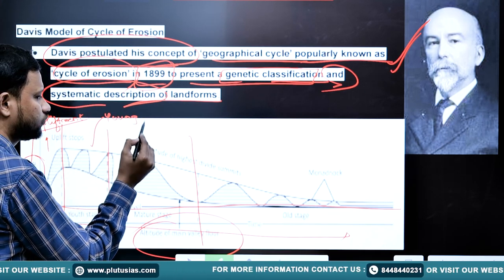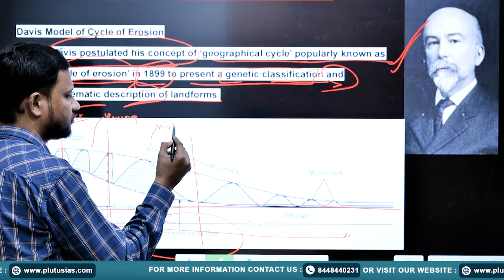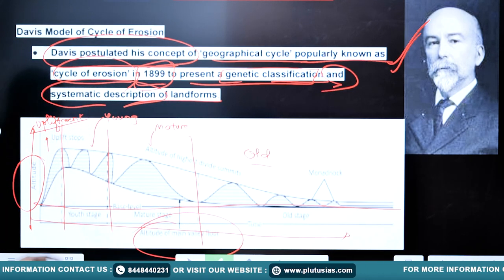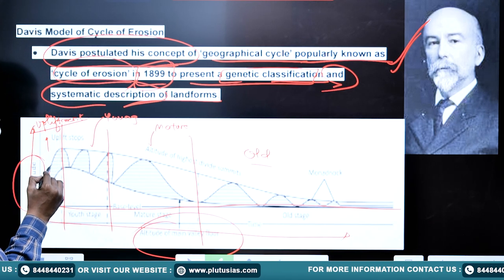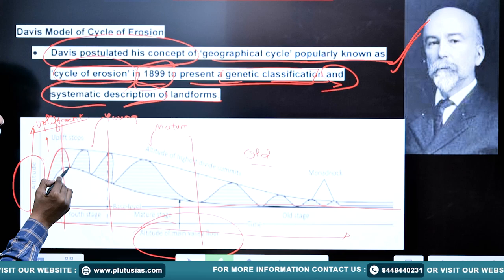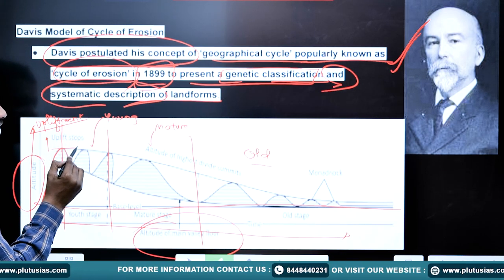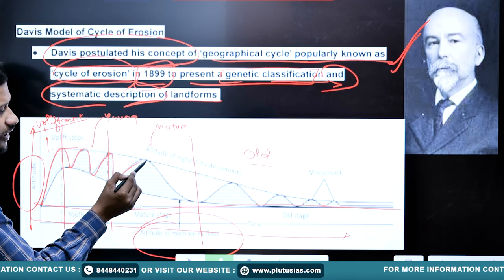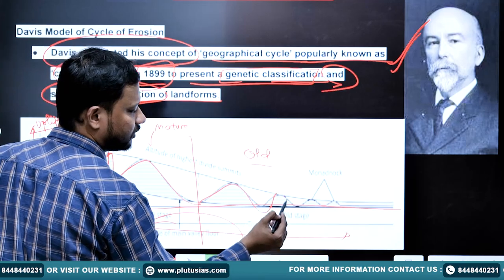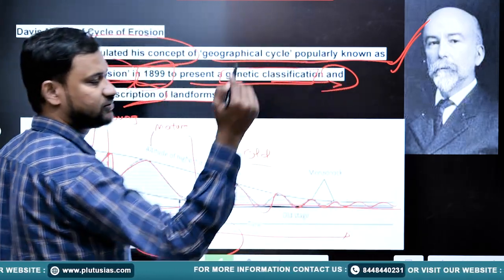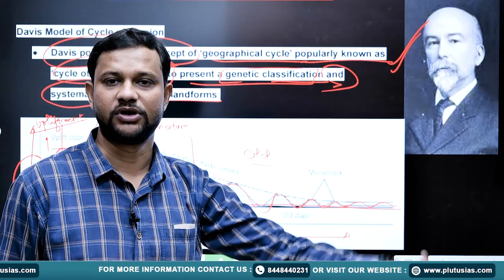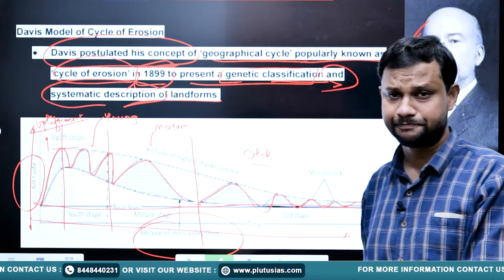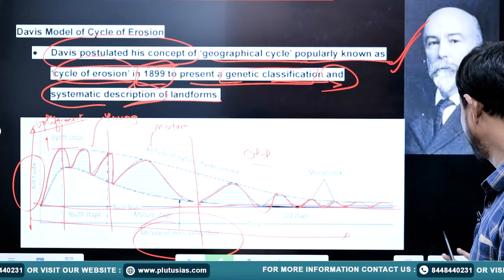Then there is a youthful stage, a mature stage, and an old stage. The graph helps you understand: first the landform starts to elevate and achieves its peak, then it enters different stages of its life — youth, then maturity where widening occurs, and finally elevation declines considerably until it possibly matches the base level over infinite time. This is the geomorphic cycle as Davis envisioned it.